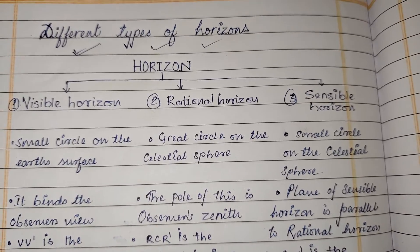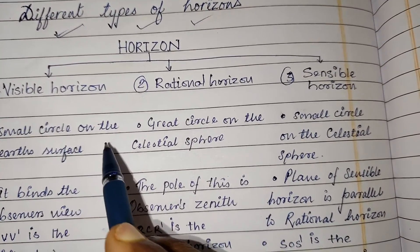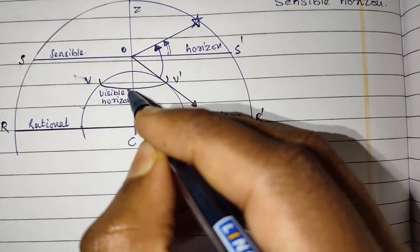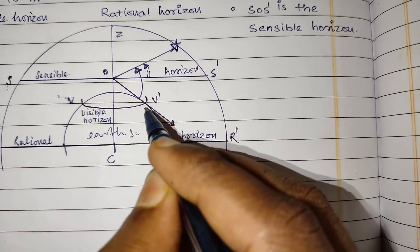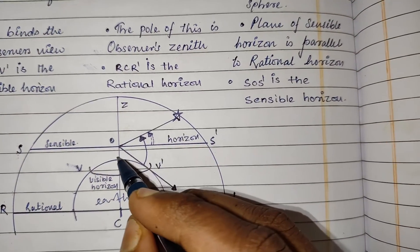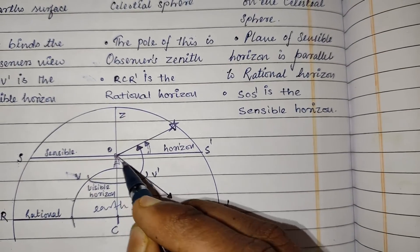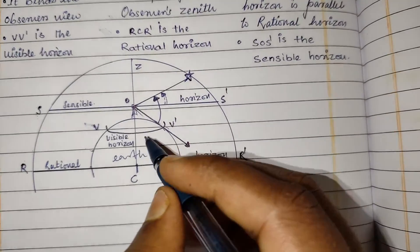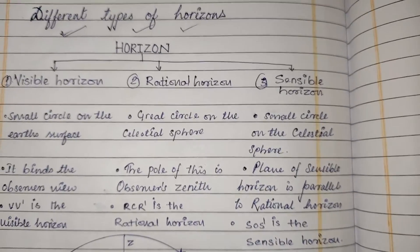So what is visible horizon? Visible horizon is a small circle on the earth's surface. As you can see in this picture, visible horizon is a small circle on the earth's surface. It binds the observer's view. Here is the observer, and as you can see in this picture, VV dash is the visible horizon.